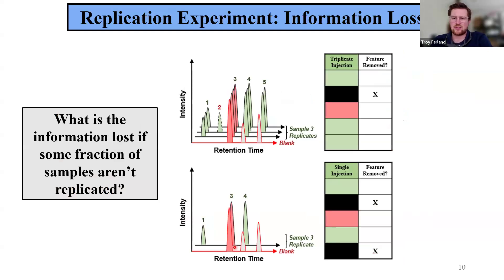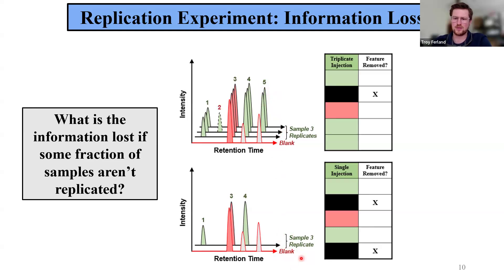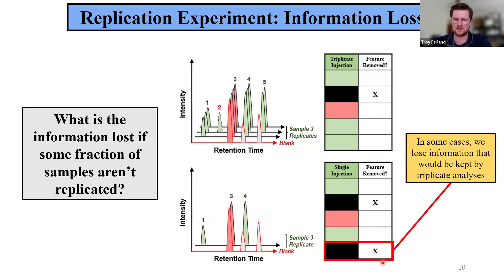Let's look at a few examples of potential information penalties. In some cases, a reduction in sample replication may result in the loss of important information. Looking at sample set three with full triplicate analysis versus a single replicate scenario — we are no longer detecting feature five, which was only measured in replicates two and three. On an occurrence level, this would be equivalent to not detecting a chemical at a specific site. Extrapolated to a feature level, we're no longer identifying that chemical feature in our dataset — important information that would have been kept with triplicate analysis.